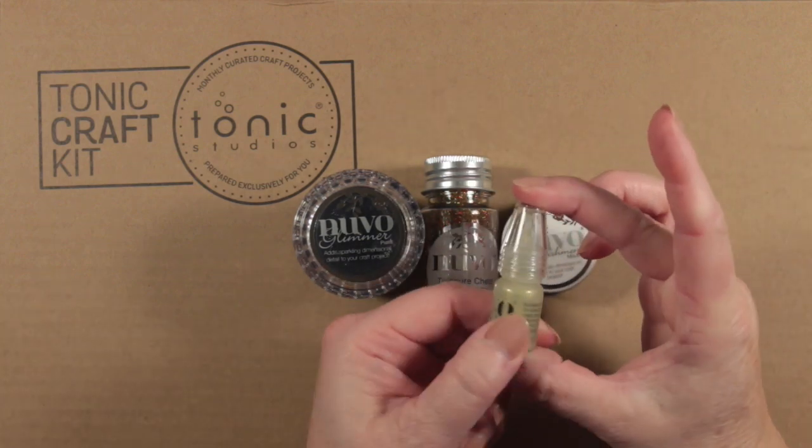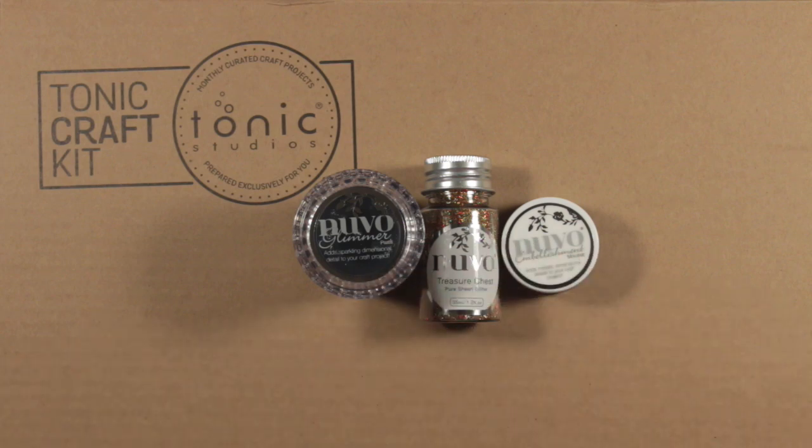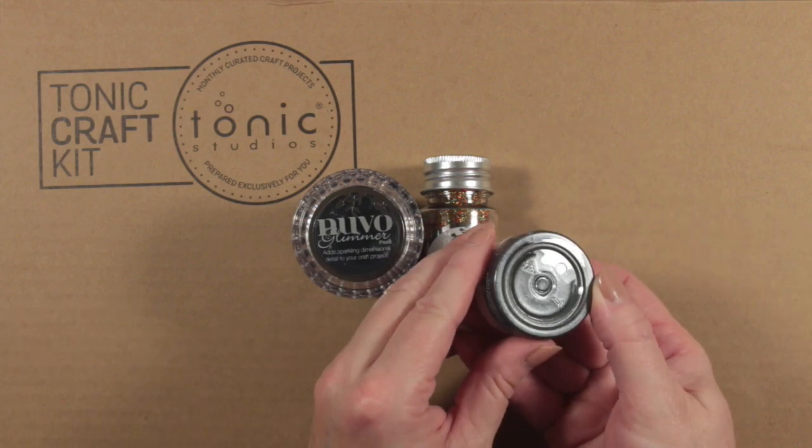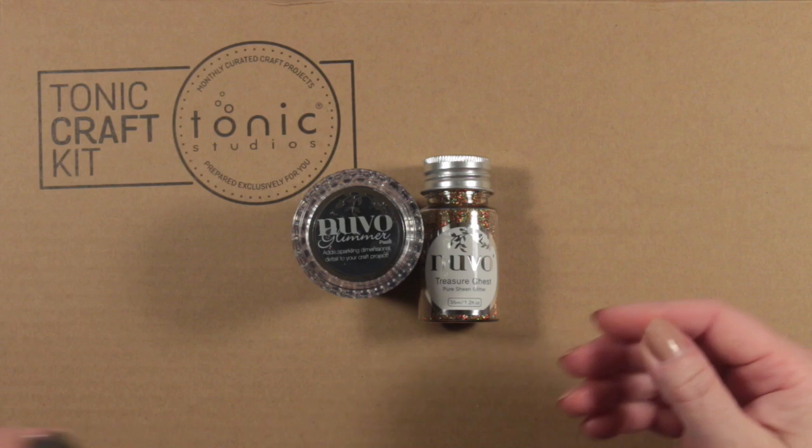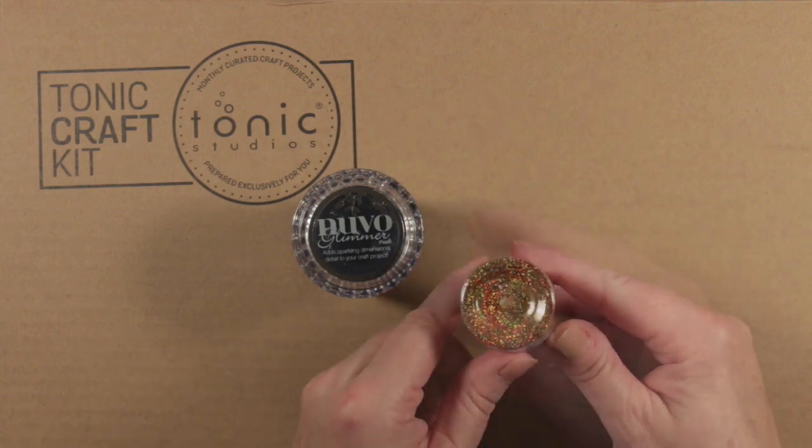The Nuvo crystal drops are called bright gold. Then we move on to an embellishment mousse. This color is black ash. You can see it shimmering away at the bottom of the pot there, and the glitter is called treasure chest, and that's gleaming away with all kinds of reds and golds in there.